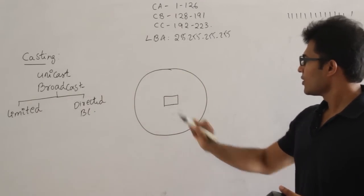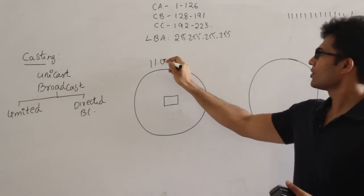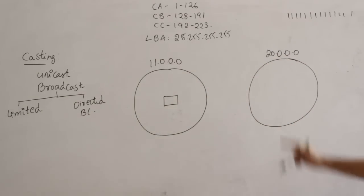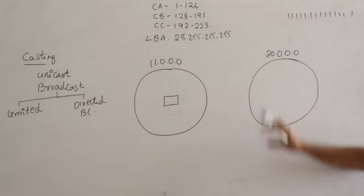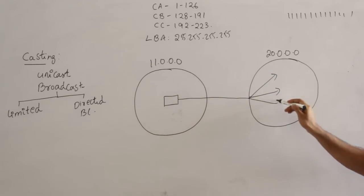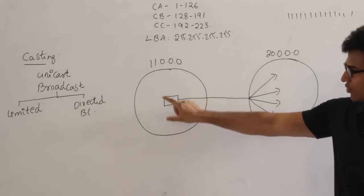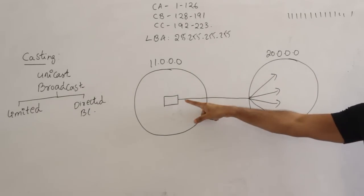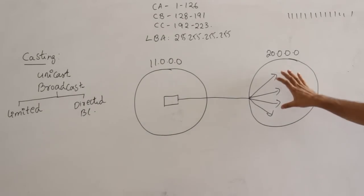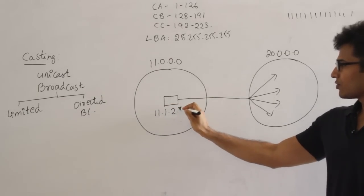Directed broadcast is when a host in one network wants to send a message to all hosts in a different network. For example, from network 11.0.0.0 to all hosts in network 20.0.0.0, which has about 16 million hosts. This differs from limited broadcasting: limited broadcast targets everyone in the same network, while directed broadcast targets everyone in another network.